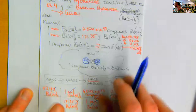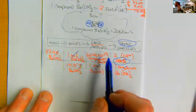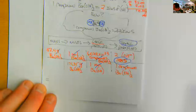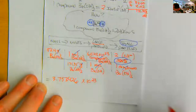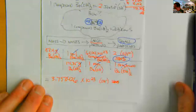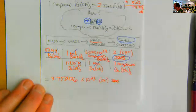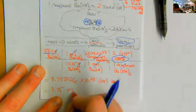We take 53.4 divided by 171.35, multiply by 6.022 × 10²³, then multiply by 2. That gives us 3.75426 × 10²³ OH ions. Now for significant figures — we have three sig figs from our given value; the constants have infinite sig figs — so our final answer is 3.75 × 10²³ hydroxide ions.